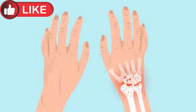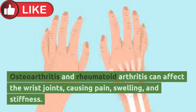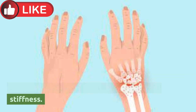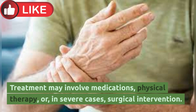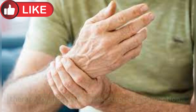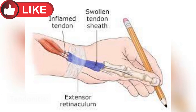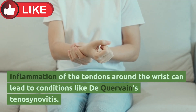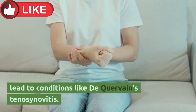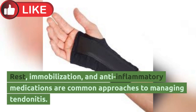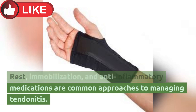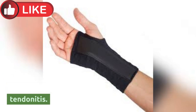Arthritis — osteoarthritis and rheumatoid arthritis can affect the wrist joints, causing pain, swelling, and stiffness. Treatment may involve medications, physical therapy, or in severe cases, surgical intervention. Tendinitis — inflammation of the tendons around the wrist can lead to conditions like De Quervain's tenosynovitis. Rest, immobilization, and anti-inflammatory medications are common approaches to managing tendinitis.